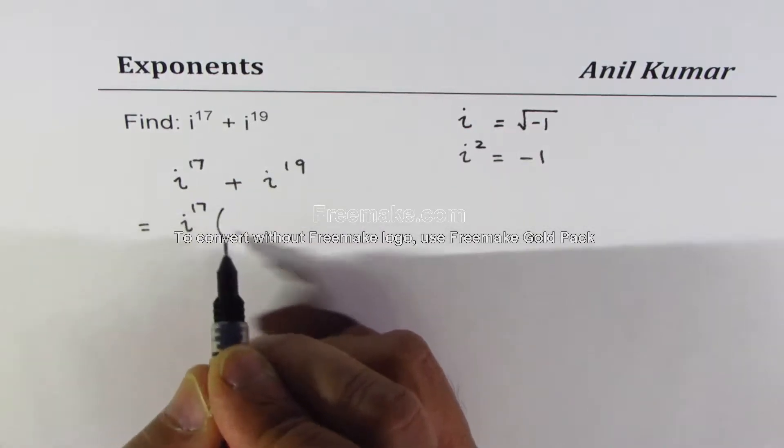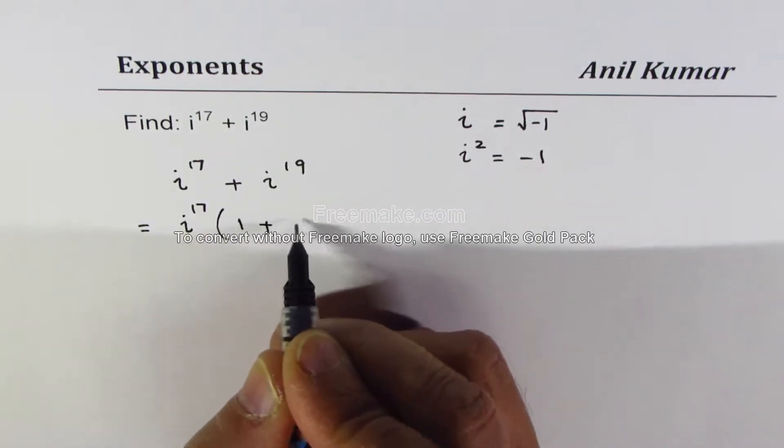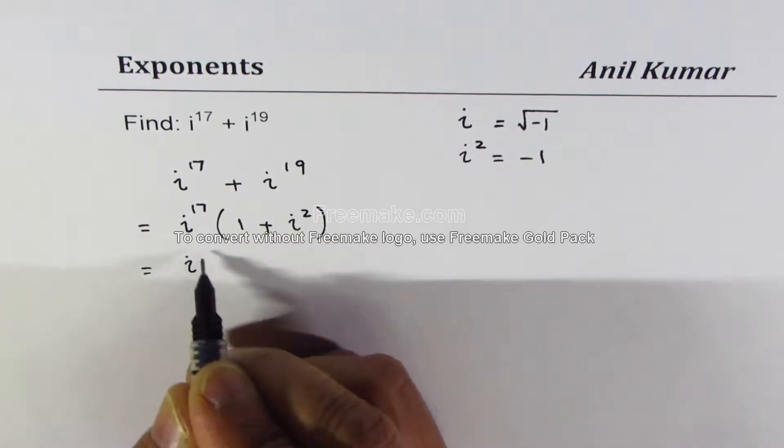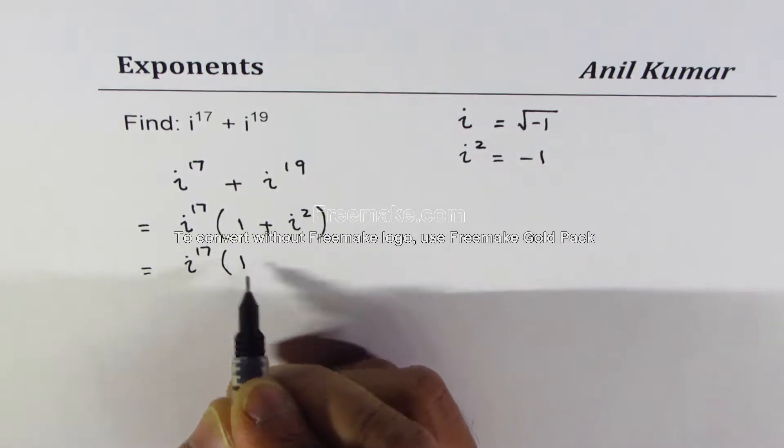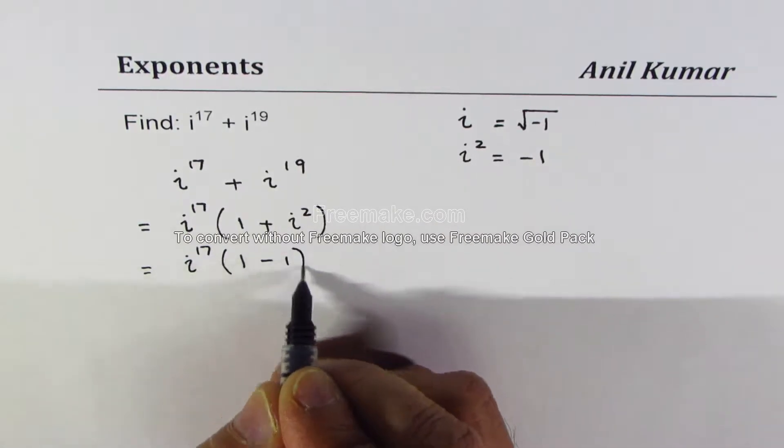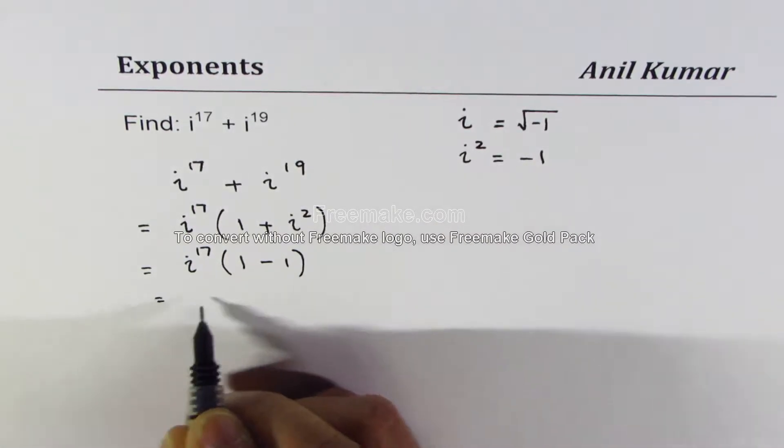So you get i to the power of 17 times 1 plus i squared. Now i squared is minus 1, so 1 minus 1 is 0.